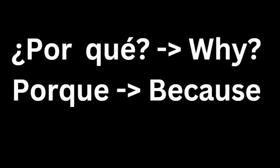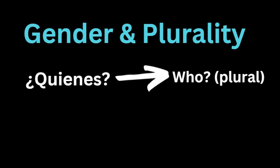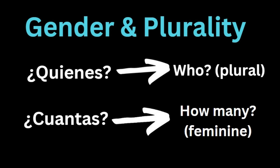Some question words have genders and plurality. For example, 'quiénes' asks about who as in multiple people instead of one. Another example: 'cuántas' means how many for feminine nouns, because the ending 'a' is most of the time feminine in Spanish. 'Cuántos' means how many for masculine nouns, because the ending 'o' is most of the time masculine in Spanish.